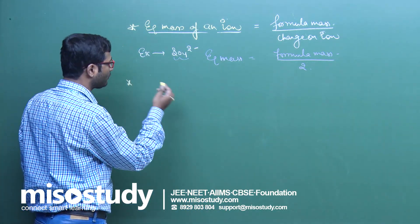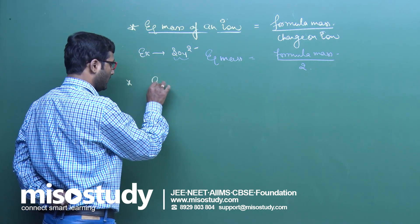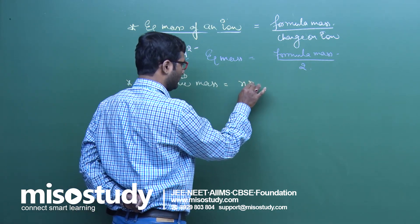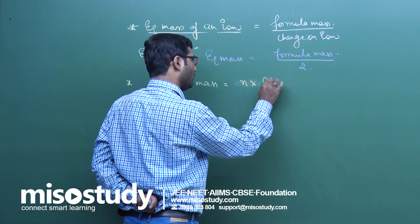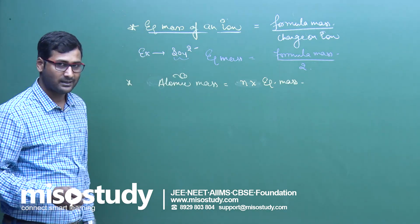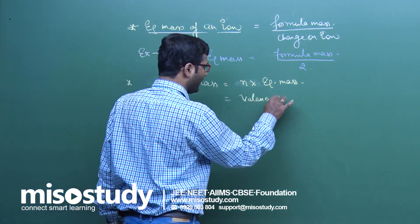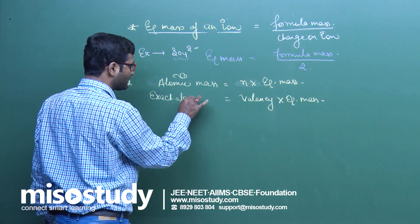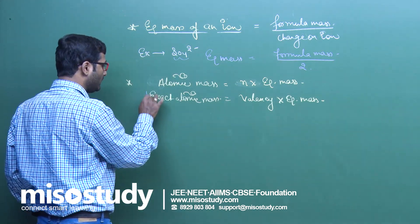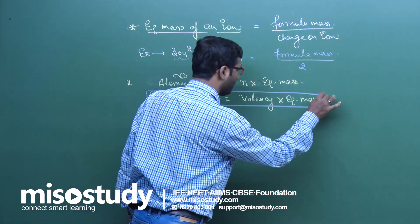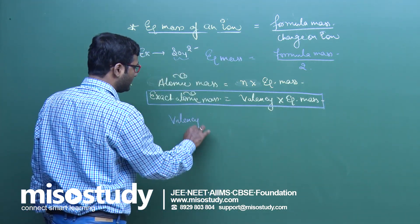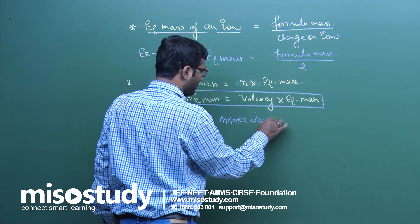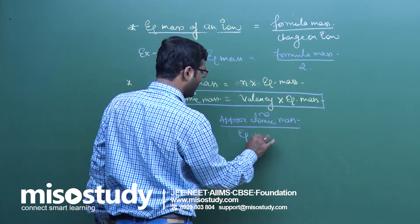Next, if atomic mass is given, the relation is: atomic mass equals n multiplied by equivalent mass, where n is the valency. So for any solid metal, exact atomic mass equals valency multiplied by equivalent mass. Therefore, valency equals approximate atomic mass divided by equivalent mass.